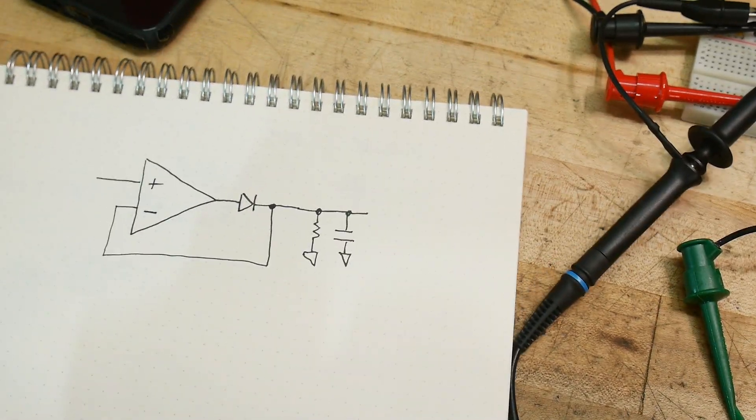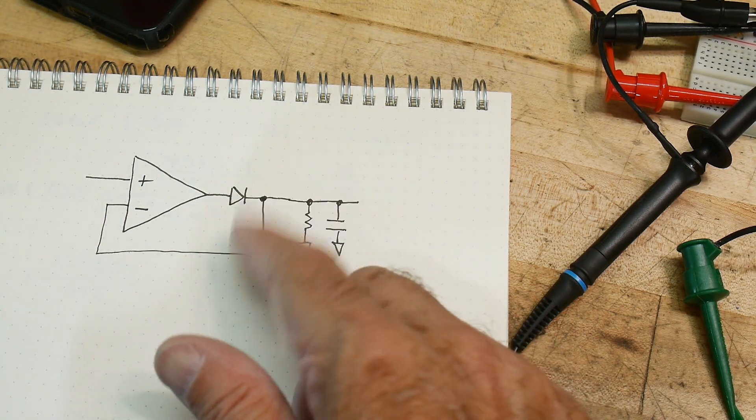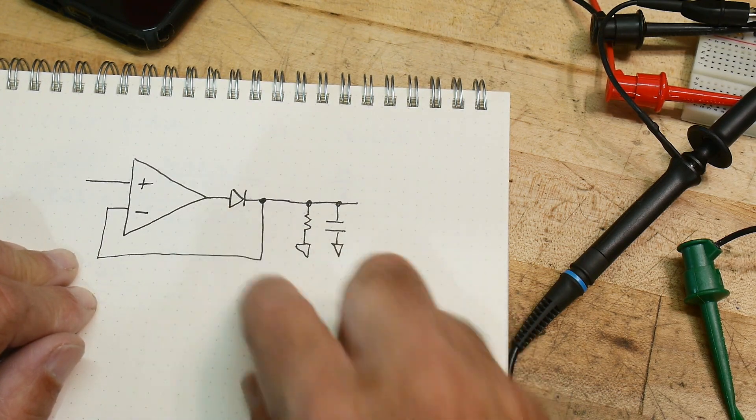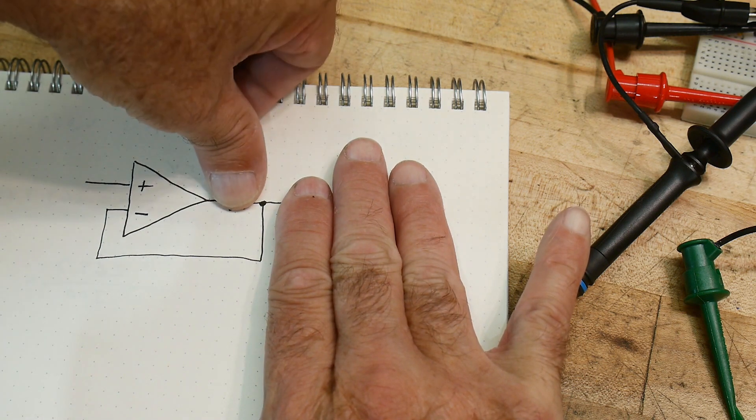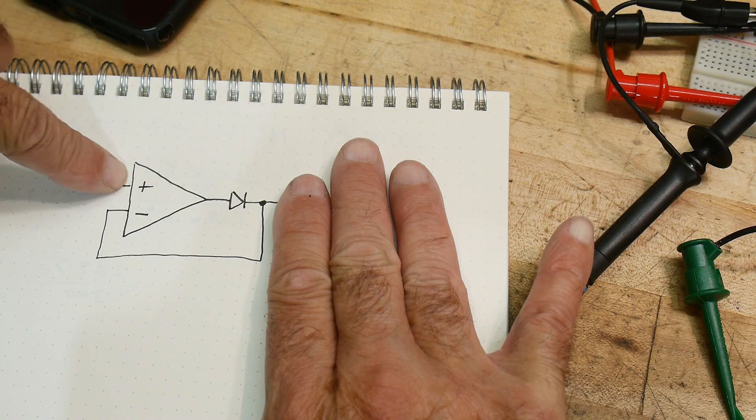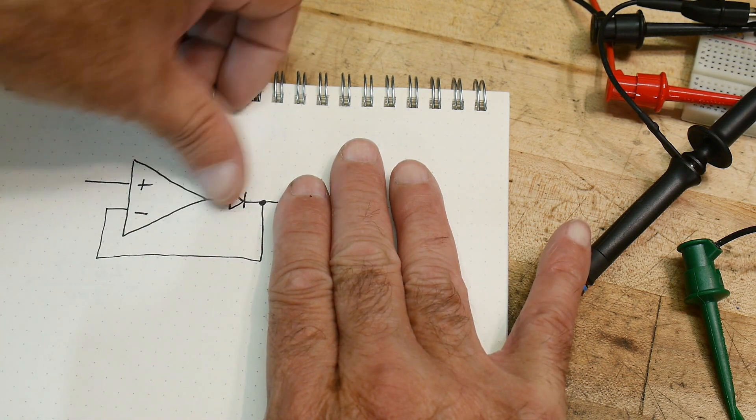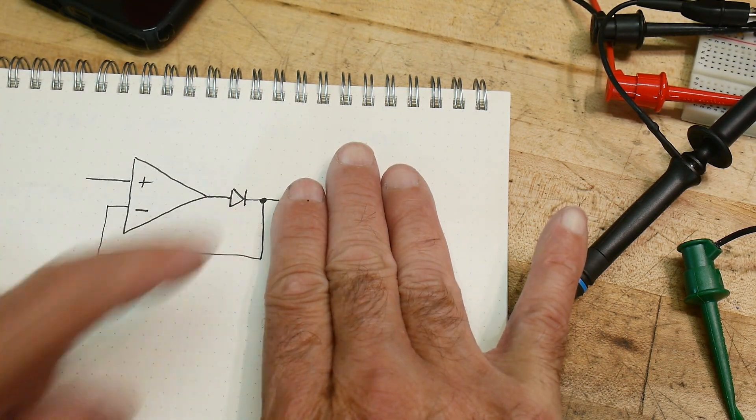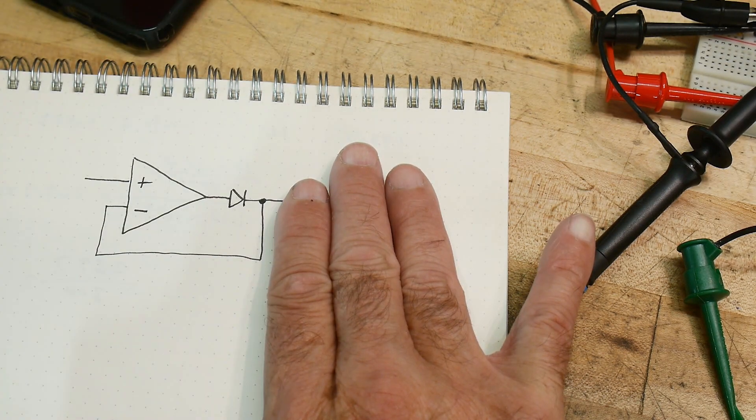So the first circuit that we're going to start with here is a precision rectifier or a peak detector circuit, or whatever you want to call it. It's a diode with an op amp wrapped around it. So ignore this part over here and ignore the diode for a second and it's just a unity buffer. The plus input and the minus input, the output, and the minus are tied together. So that's just a unity buffer.